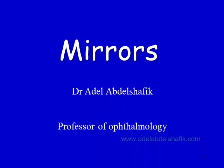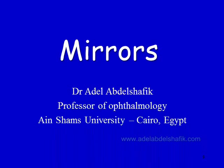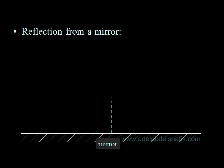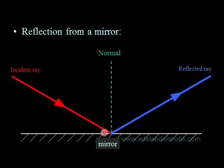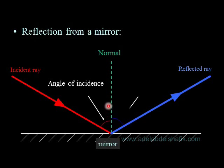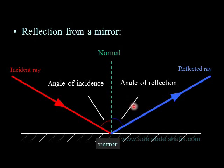Now we go to the subject of mirrors. This is the mirror; a line 90 degrees to the surface is the normal, and incident rays are reflected back. The angle between the reflected ray and the normal is the angle of reflection, and the angle of incidence equals the angle of reflection.